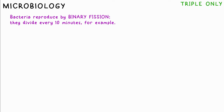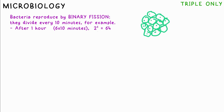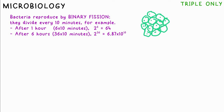For triple only: bacteria multiply by binary fission, so the number doubles every say 10 minutes. If we started with one bacterium, after an hour we'd have 2 to the power of 6, that's 64. After six hours, that's 36 lots of 10 minutes, so in theory we'd have 2 to the power of 36 — that's in standard form 6.87 × 10¹⁰.